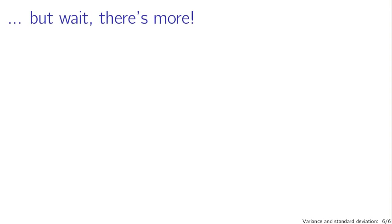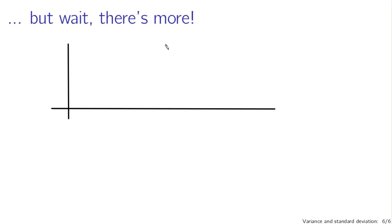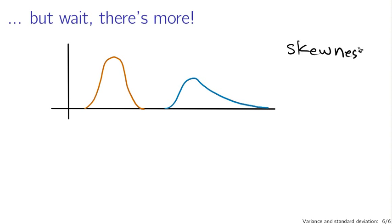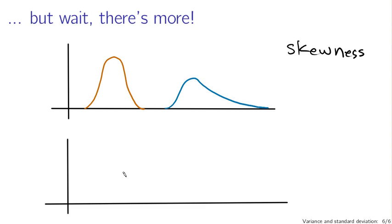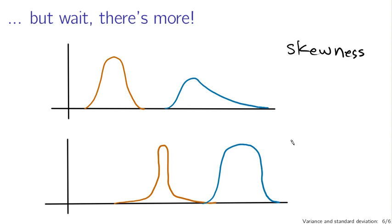That's about it for variance, but there's a little more to say. The distributions we discussed earlier — one that looks symmetric versus one with a long tail — that's a question of symmetry, and the mathematical name for this is skew or skewness. There are also distributions that look peaked versus flat-tailed, and this is called kurtosis — which kind of sounds like a disease or perhaps a villain from a comic book.